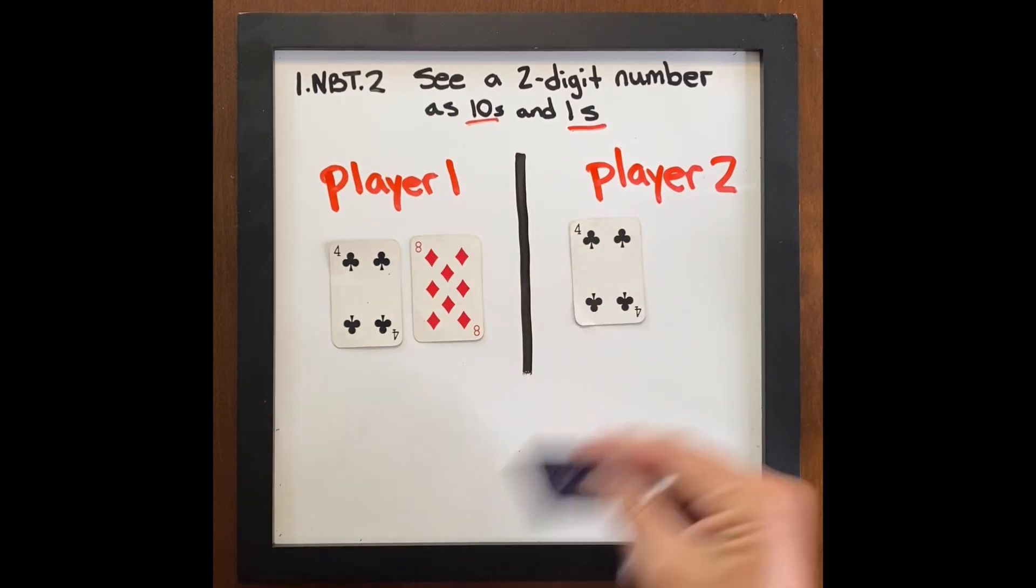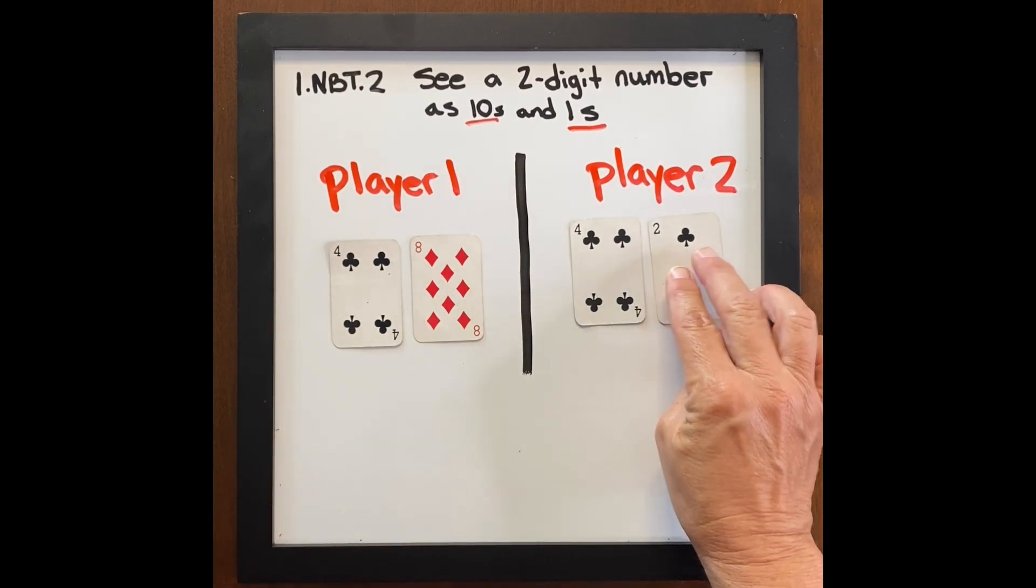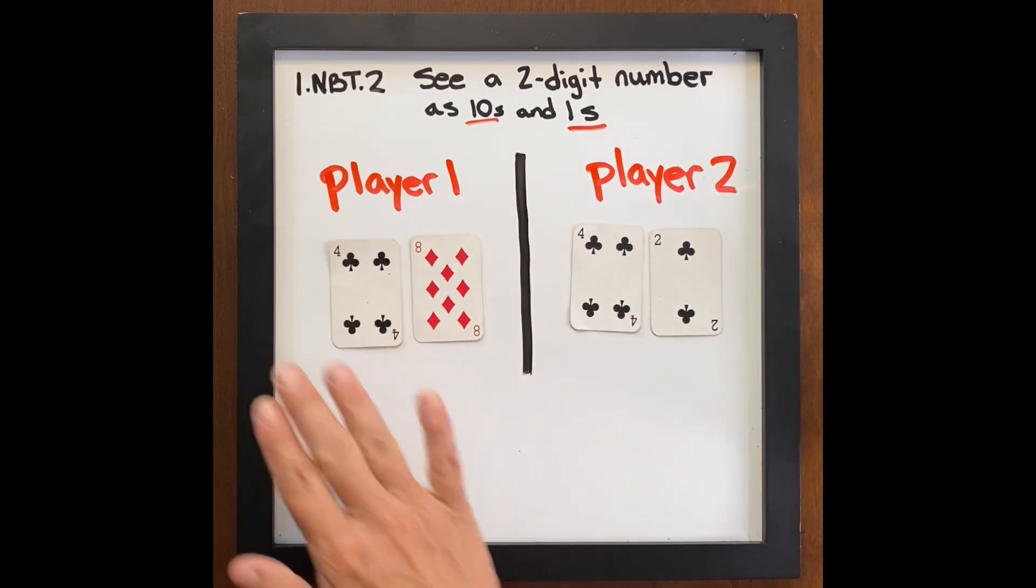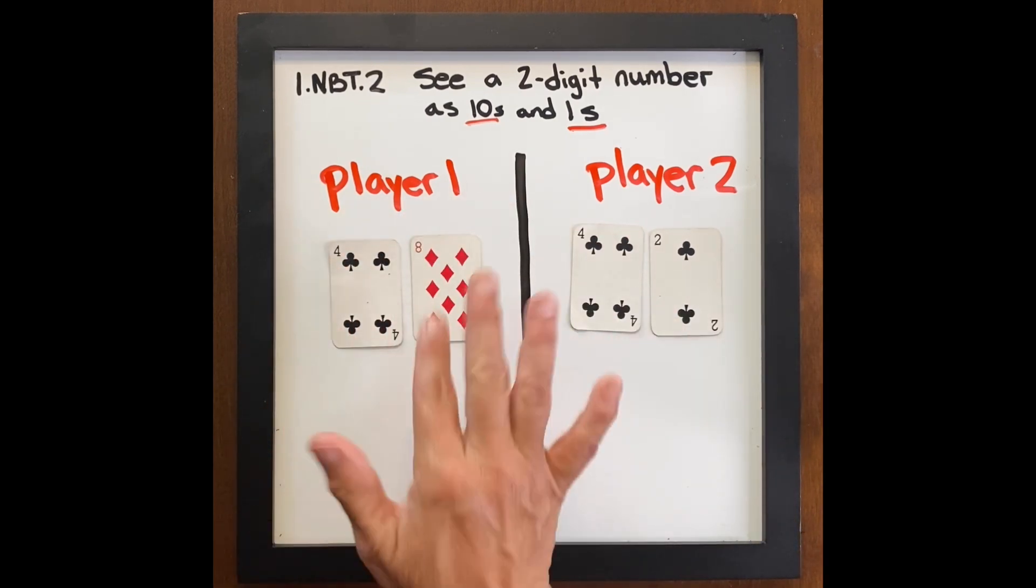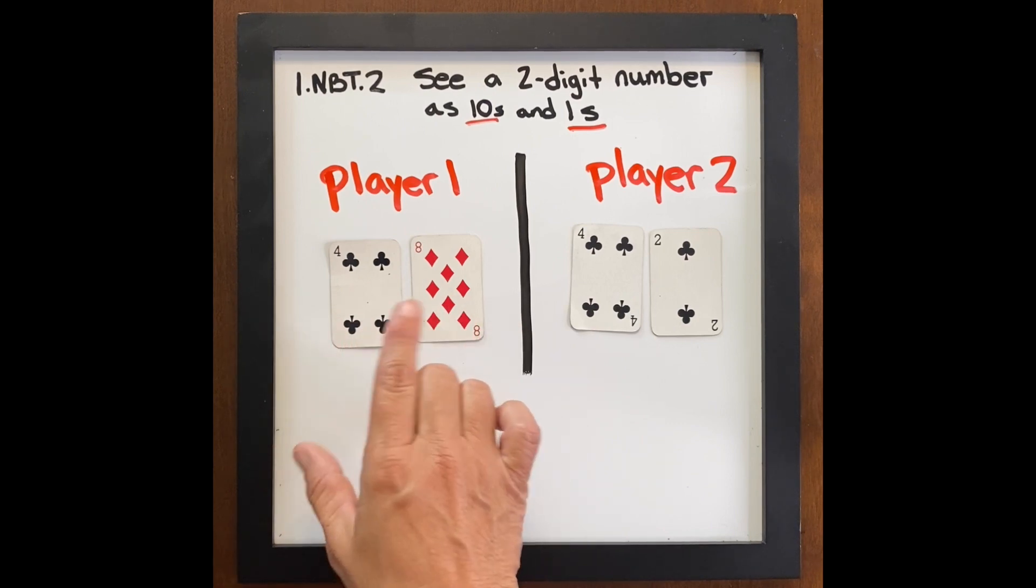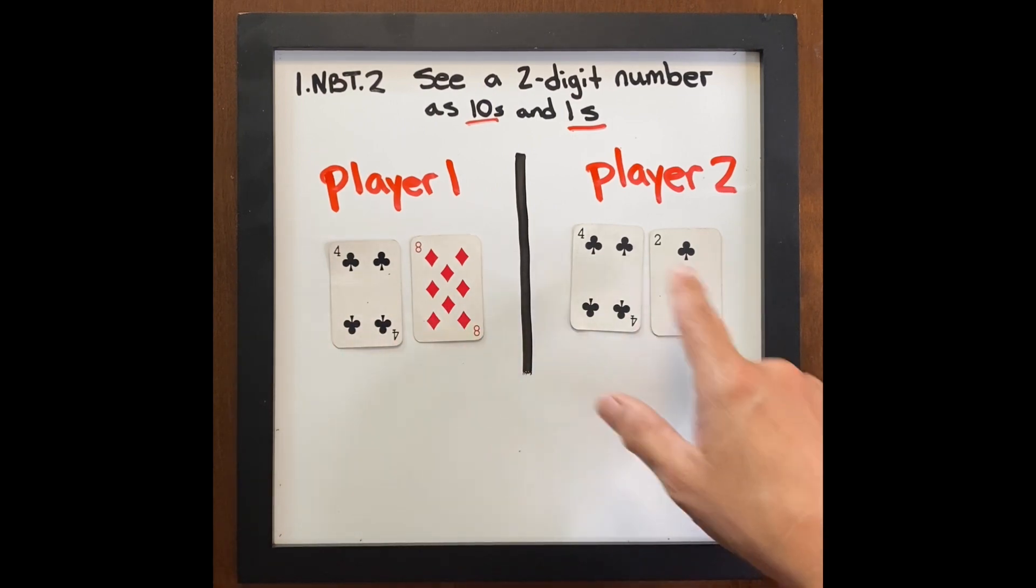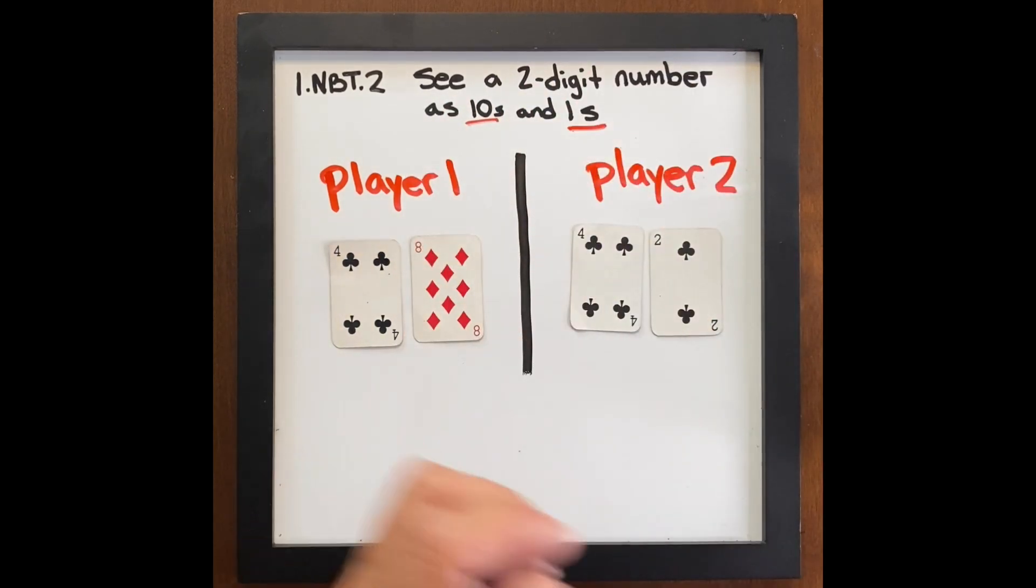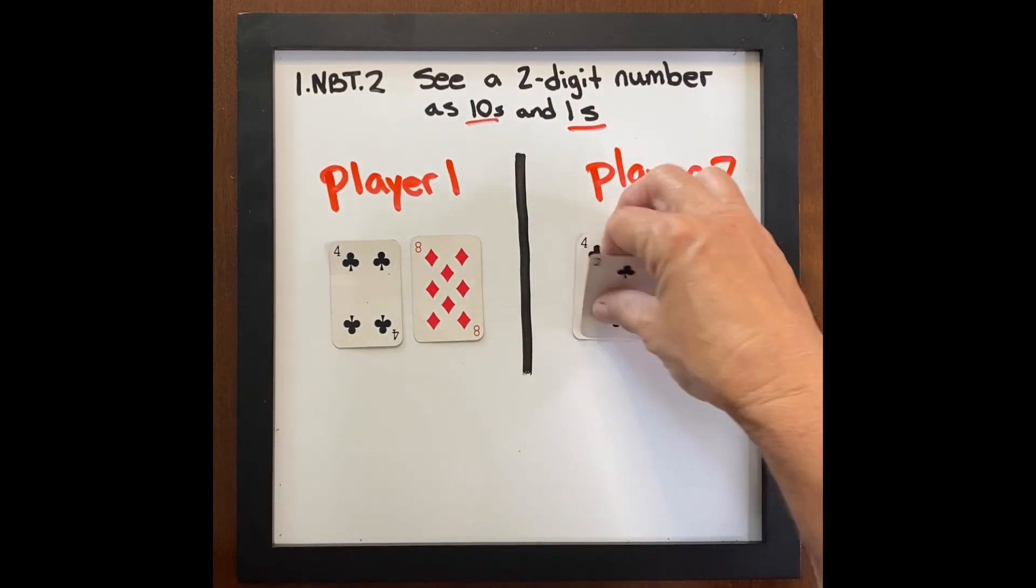Four tens, this is close. Player two didn't win. Four tens, two ones, 42. So player one, again, would have to say the place value or the number 48 is greater than 42. And now you're using the two-digit numbers, also using greater than, less than.